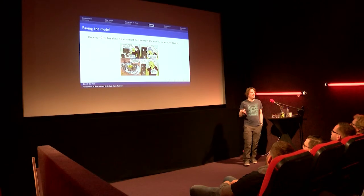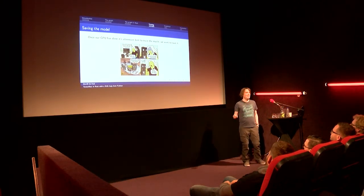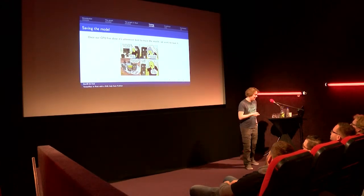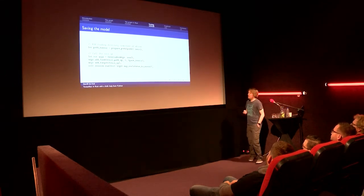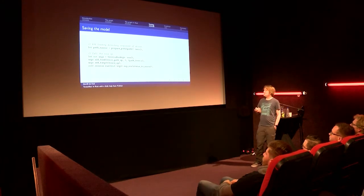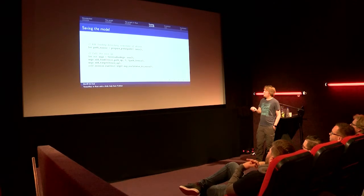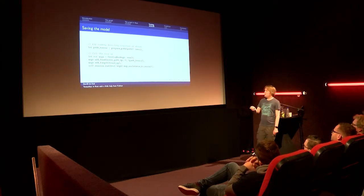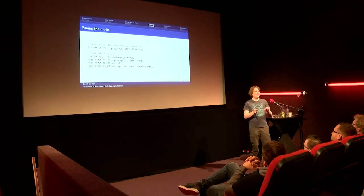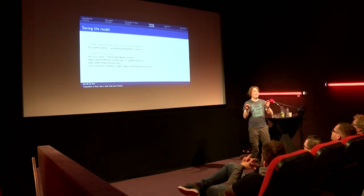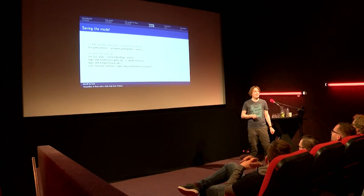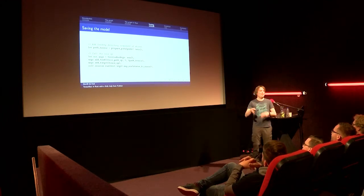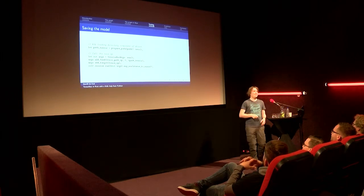Now we've done some training over several epochs and want to save the model. For saving, the target is the save op, but TensorFlow also needs to know what path to save to, which we provide through a placeholder. The graph requires a path that includes a directory component — even if you want to save in the current directory you must prefix with a directory name. So there's a prepare_path helper that adds './' if there's no directory component.